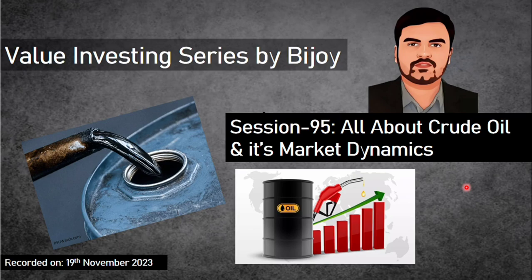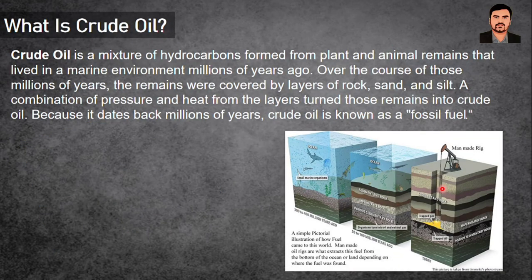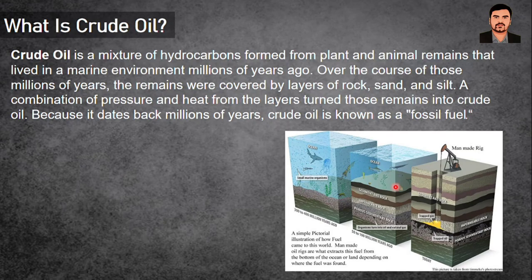Crude oil is simply a mixture of hydrocarbons formed from plant and animal remains that lived in a marine environment millions of years ago. Over the course of millions of years, the remains were covered by layers of rock, sand, and silt. A combination of pressure and heat from those layers turned the remains into crude oil. Huge years are required to convert those fossil remains into precious crude oil.